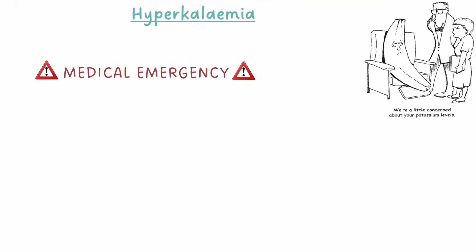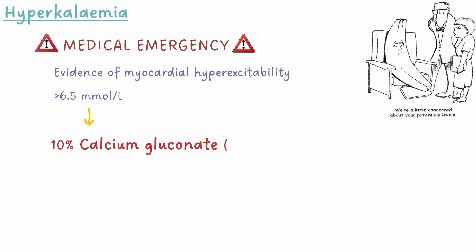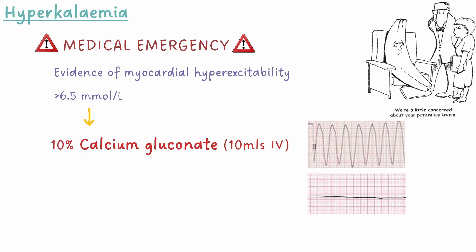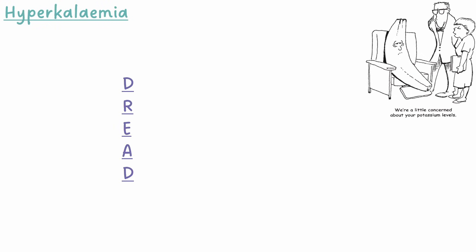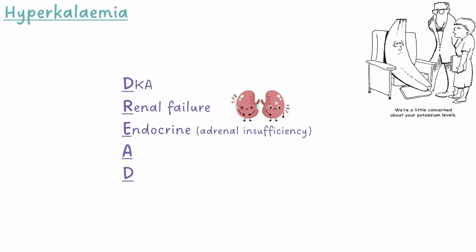In these cases, we should start treatment with calcium gluconate, which helps stabilise the myocardium and reduces the risk of developing VT or asystole. Insulin will reduce the concentration of potassium in the blood by moving it intracellularly, and salbutamol works by a similar mechanism. We can use the mnemonic DREAD to remember the causes of hyperkalemia — this stands for DKA, renal failure, endocrine, artefact (often due to a clotted sample), and drugs, for example ACE inhibitors or potassium-sparing diuretics.